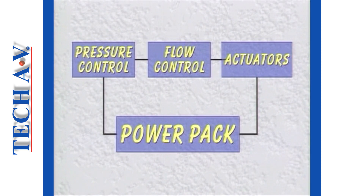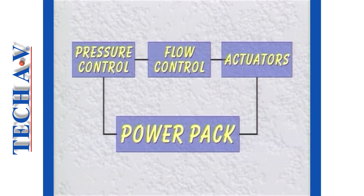To summarize, a typical hydraulic system comprises the power pack, pressure and flow control devices, and actuators. We will return after the break to look at typical hydraulic systems in more detail.